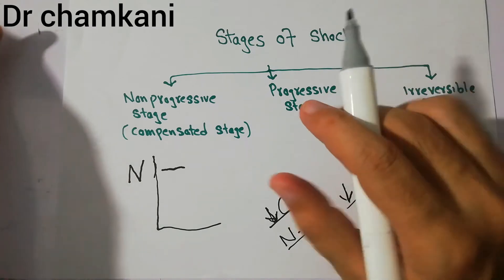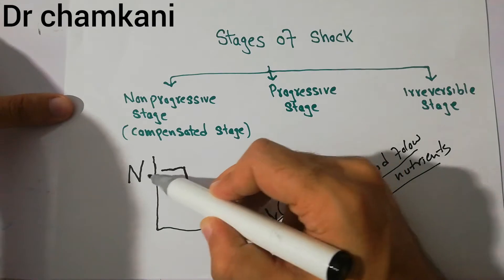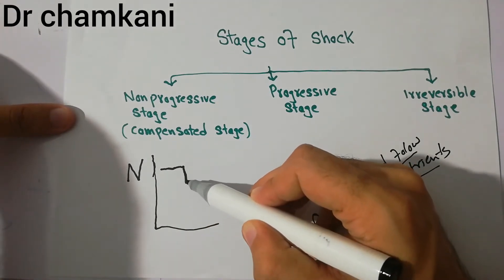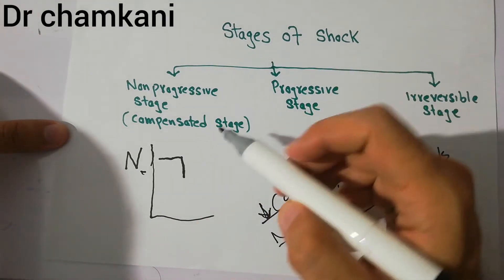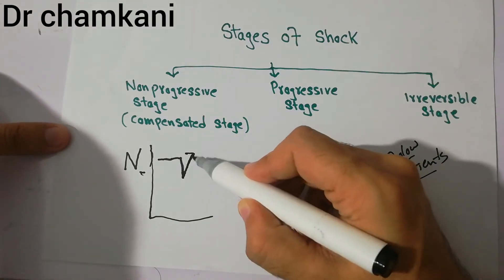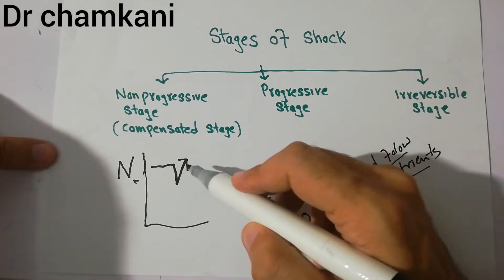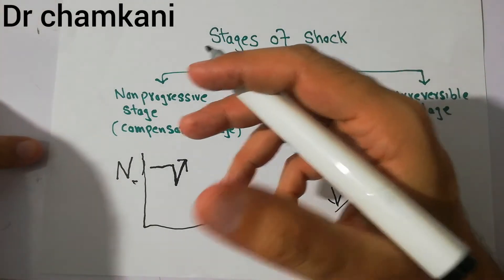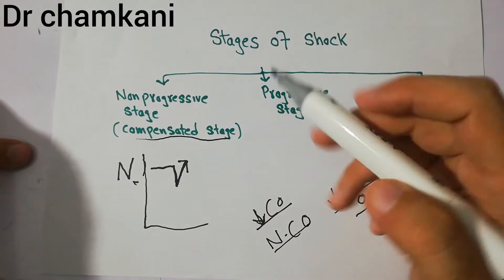In the initial non-progressive stage, suppose there is a decrease in blood flow to the tissue below the normal level. Up to a certain extent, the internal mechanisms of the human body can restore this back to the normal level. The different compensatory mechanisms can restore this decrease in blood flow, decrease in oxygen, or decrease in nutrients to the tissue. That is why it is known as compensated shock.